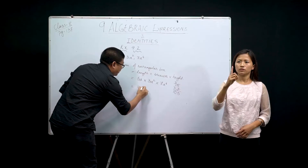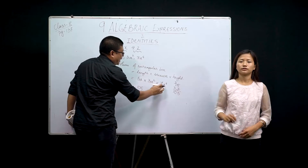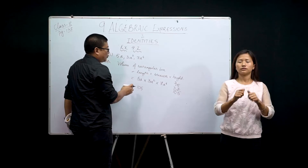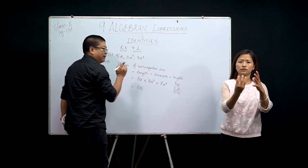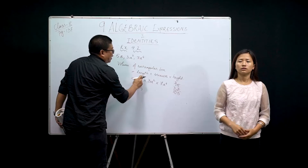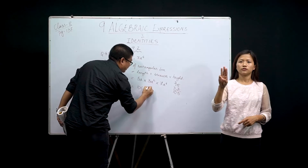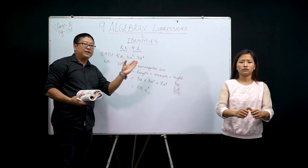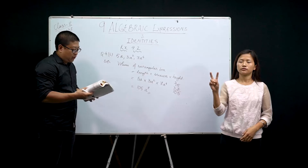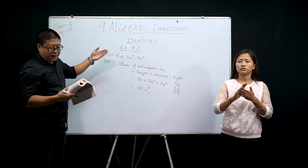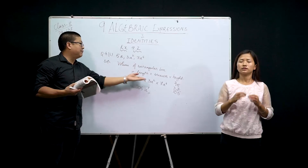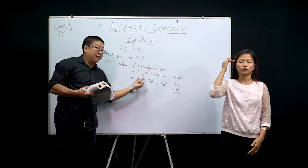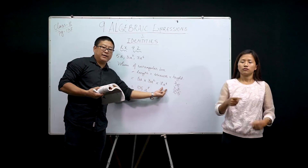We add the powers of a: 1 plus 2 plus 4 equals 7, so we write a⁷. The final answer is 105a⁷. For the remaining questions 2, 3, 4, and 5, you simply multiply in this same manner. Please practice at home — it is very simple. You need to know your times tables, the process of multiplication, and understand how the variables are being combined.